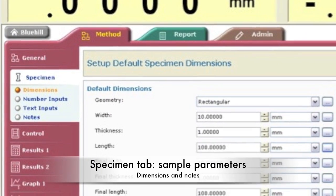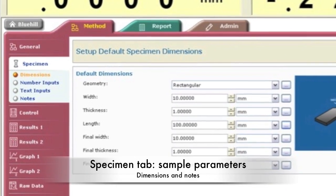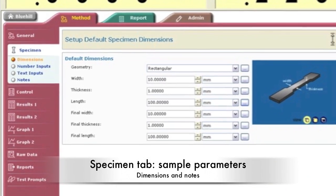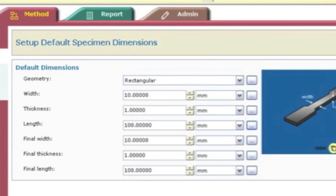The specimen tab is for specifying sample dimensions and parameters. A dog bone sample is used for this test. Select rectangular and specify the width, thickness, and gauge length of the sample. The gauge length is the distance between the clamps before starting the test.